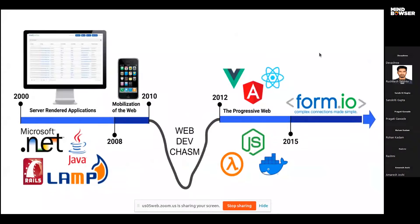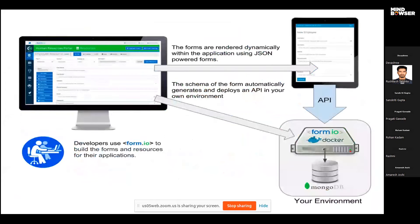Now moving on to how it works. Developers use form.io to build the forms and resources of their application. As you can see in the image, it is a form builder that we can easily use in our application using some tags. The forms are rendered dynamically within the application using a JSON-powered form. The schema of the form is automatically generated and deployed as an API in our environment. So what is a JSON-powered form and how does it work? JSON-powered form provides an open-source form builder, and that form builder is used to generate a schema.